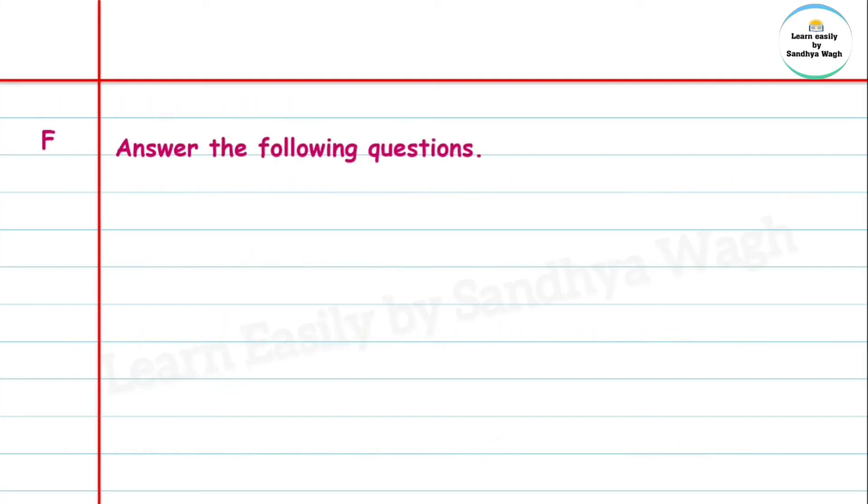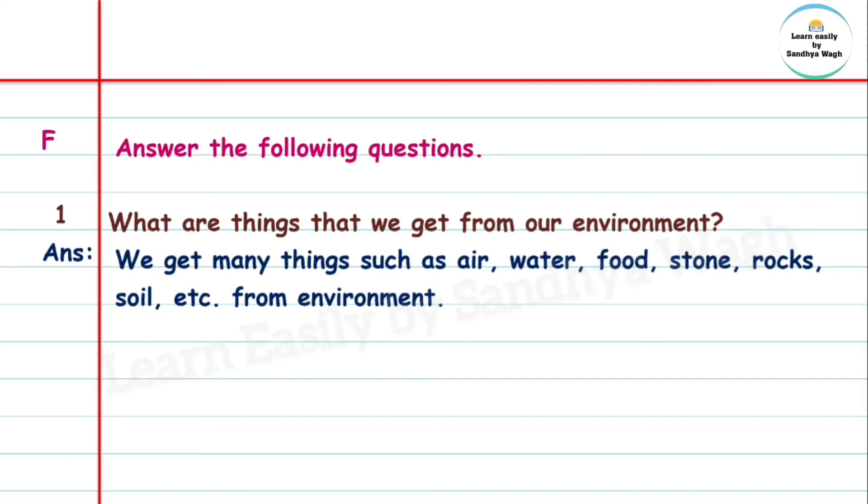Exercise F: Answer the following questions. Question 1: What are things that we get from our environment? Answer: We get many things such as air, water, food, stone, rocks, soil, etc. from environment.